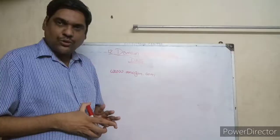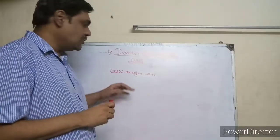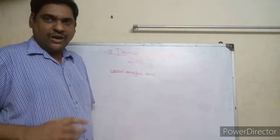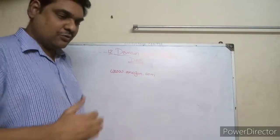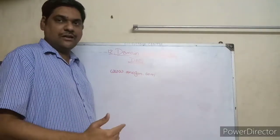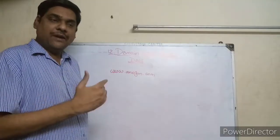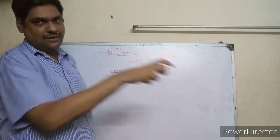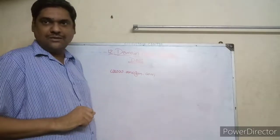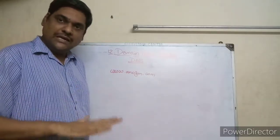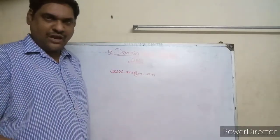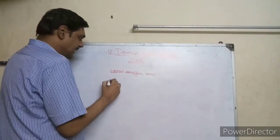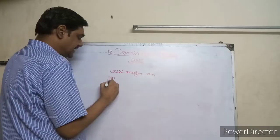The name given is called the domain name — for example, www.amazon.com is the domain name. When you type a domain name, it finds the corresponding IP address, and using that IP address the website is displayed.